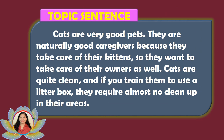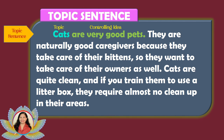Let's take a look at this paragraph: 'Cats are very good pets. They are naturally good caregivers because they take care of their kittens, so they want to take care of their owners as well. Cats are quite clean, and if you train them to use a litter box, they require almost no cleanup in their areas.' In this paragraph, the first sentence is the topic sentence. 'Cats' is the topic, and 'are very good pets' is the controlling idea.